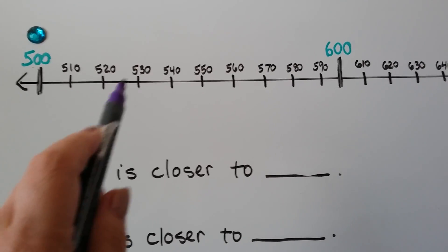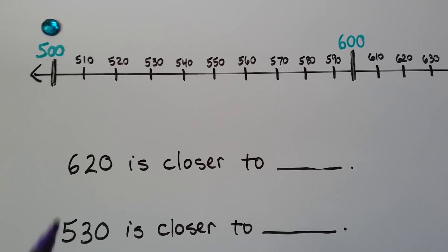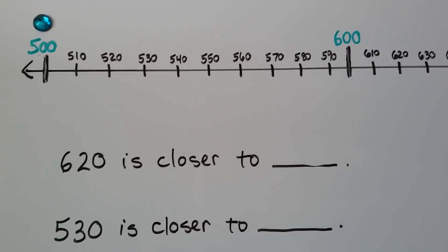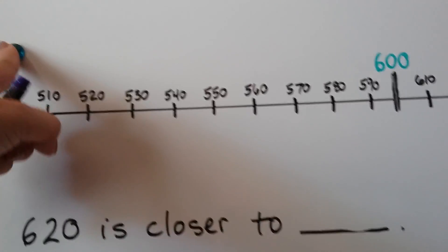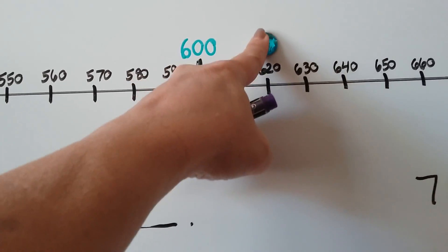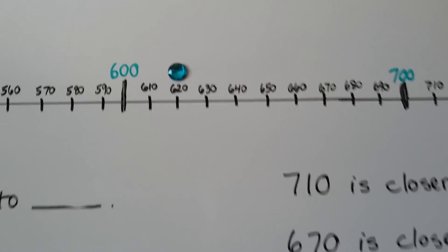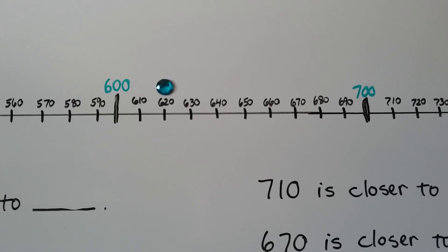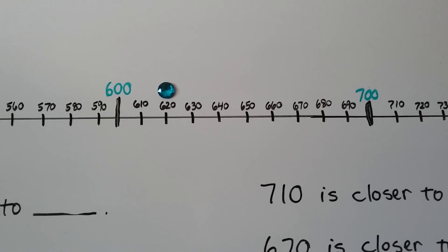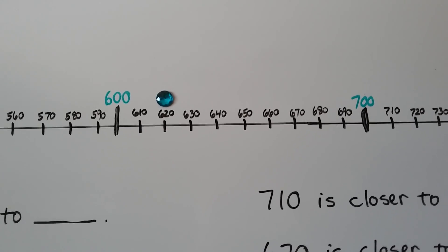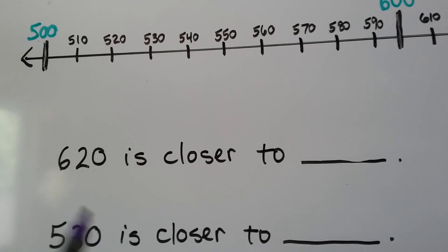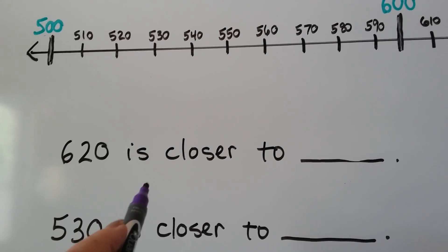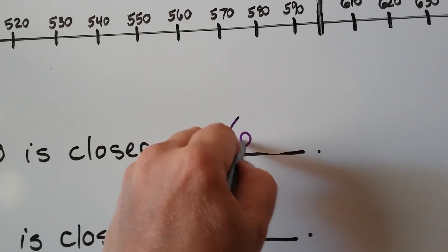So 620 is closer to what? Let's find 620 on our number line — here it is right here. It's in between 600 and 700. Which 100 is it closer to? It's closer to the 600. So if we round 620 to the nearest 100, it would be 600.